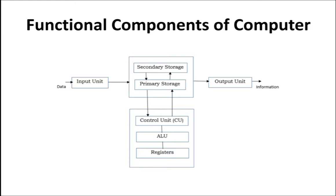I can store the control unit, ALU, and registers. The CPU contains the control unit, ALU, and registers. I will discuss each of these. What is primary storage? Primary storage is temporary memory — what can I store?